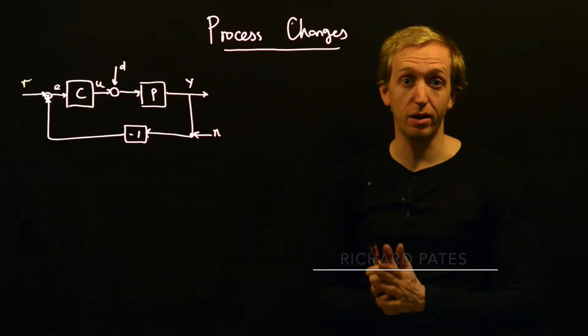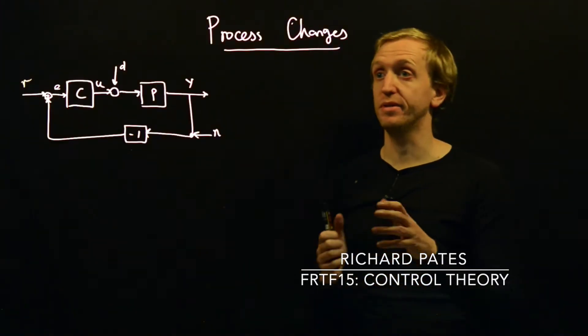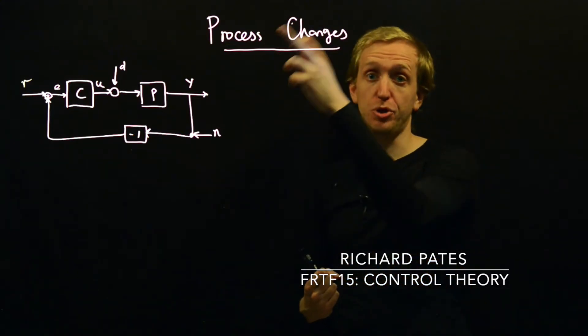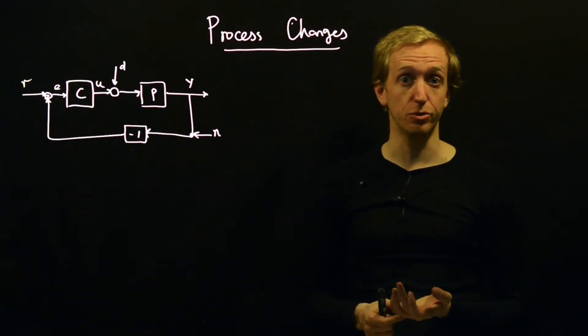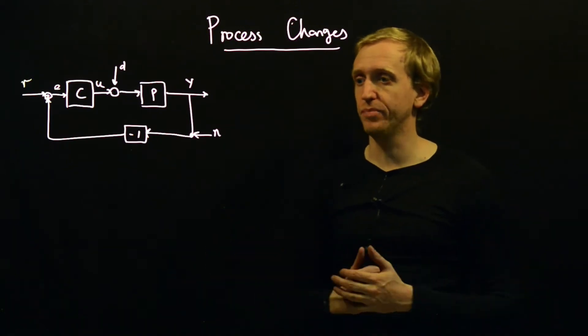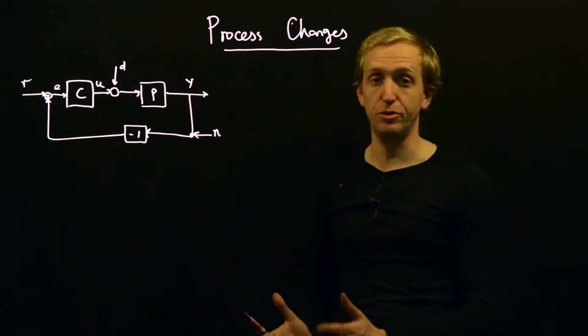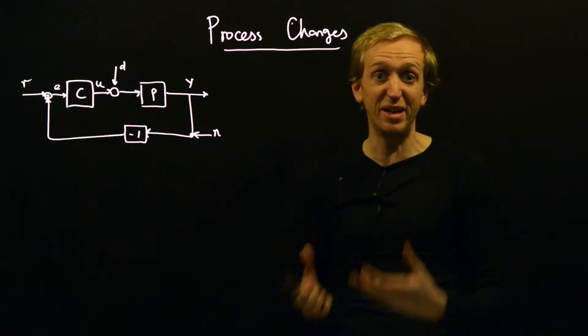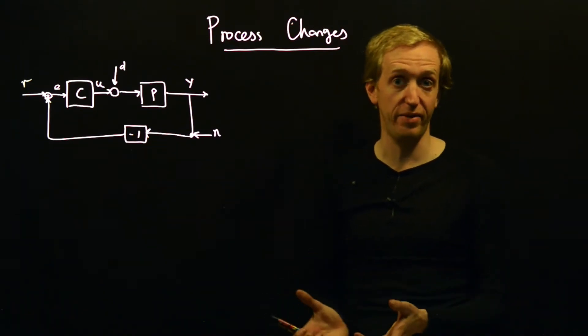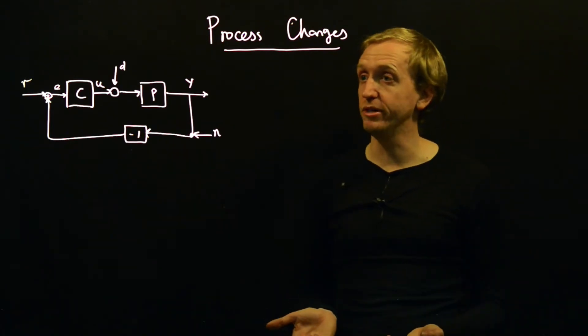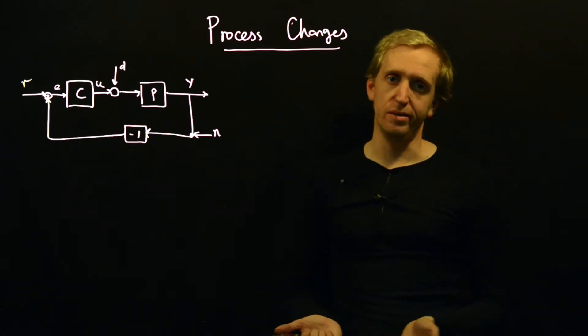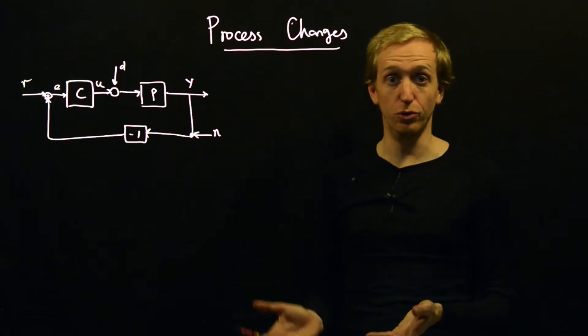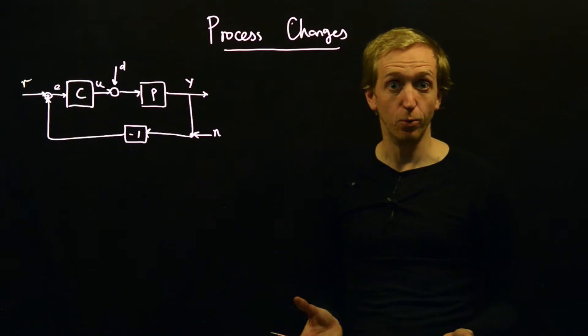I want to talk briefly about the final item on our checklist, which was how to understand and account for changes to the process that you're trying to control. This is just of absolute central relevance and you never know what the real process is. You only ever have a model. Maybe that model is not even very good. How on earth are we going to design a controller to make this thing do what we want, given we don't really know what it is?